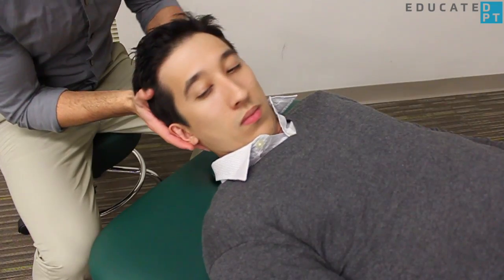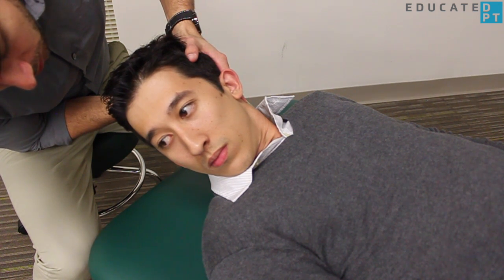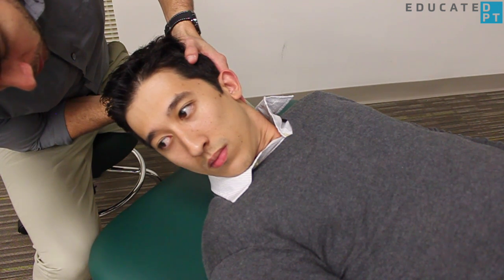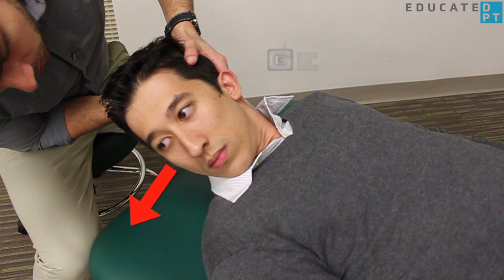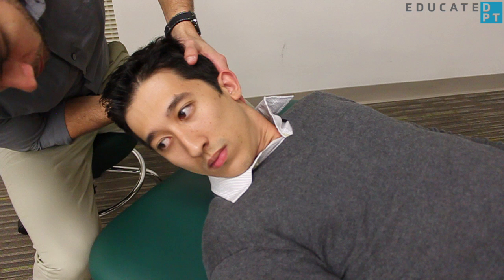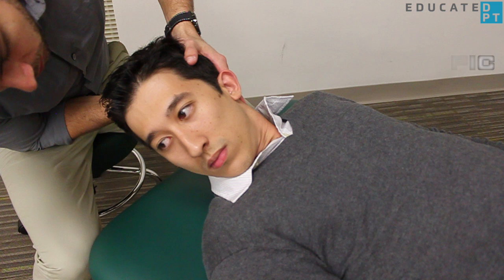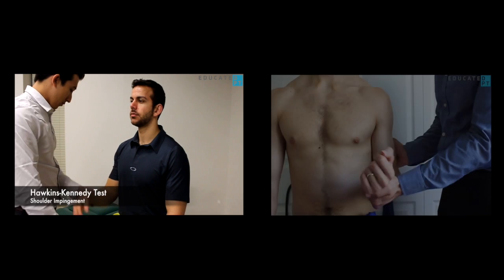Depending on the direction and duration of the beating, various conclusions can be arrived at. Beating towards the ground is known as geotropic nystagmus and may be indicative of canalolithiasis of the horizontal canal. Whereas beating away from the ground is known as apogeotropic nystagmus and may be more indicative of cupular lithiasis.